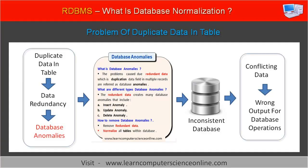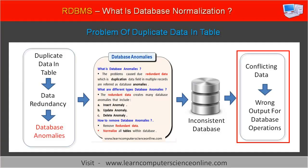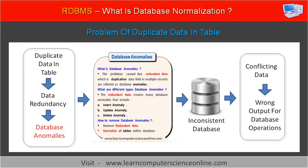The inconsistent state of the database is caused due to the failure of a database operation that fails to update all the records. This inconsistent state produces inaccurate results for various database queries and adversely affects various database operations. Therefore, the database structure must be normalized while designing the database to avoid any potential problems.